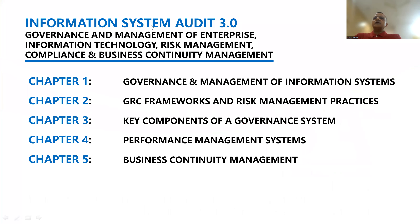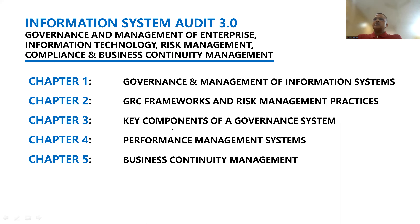Module two deals with governance and management of enterprise information technology, risk management, compliance, and business continuity management. Module two has five chapters. Chapter one talks about governance and management of information system; chapter two talks about GRC, that is governance framework and risk management practices; chapter three talks about the key components of a governance system; chapter four talks about the performance management system; and chapter five is business continuity management. From the exam perspective, all five chapters are of great importance because in the last exam also, there were many questions asked and framed around these topics.